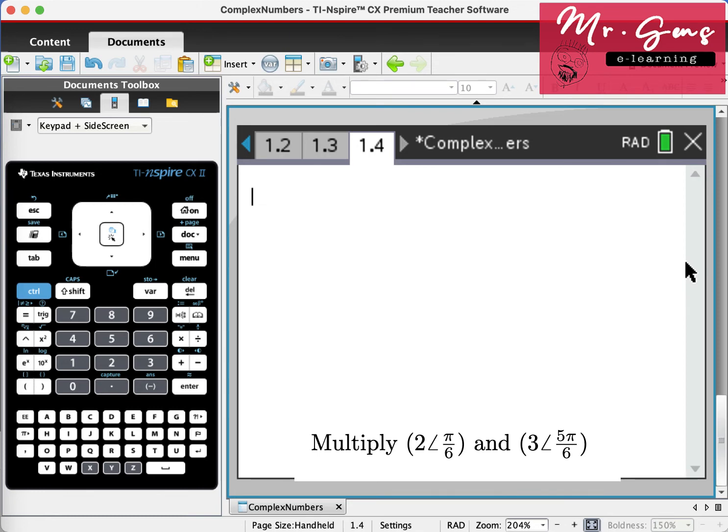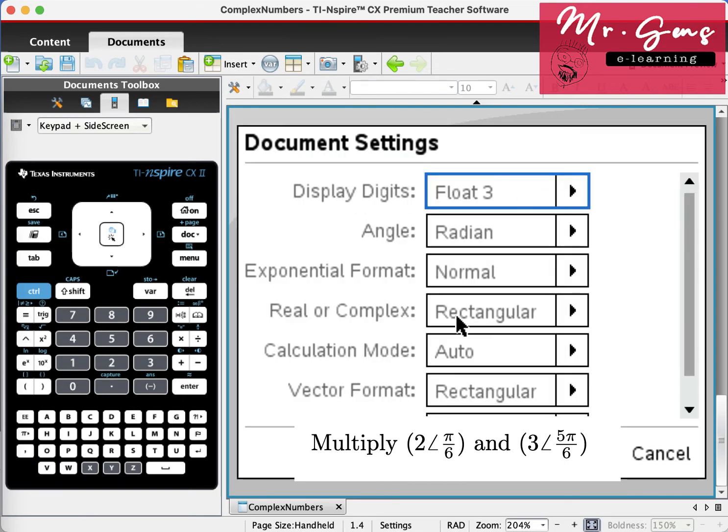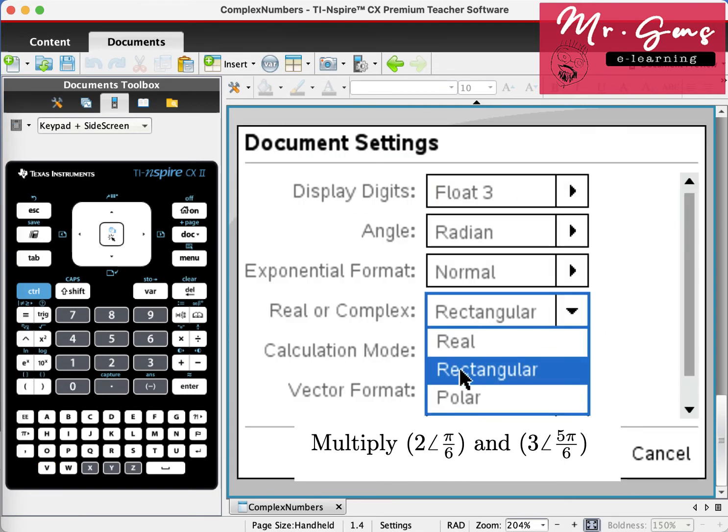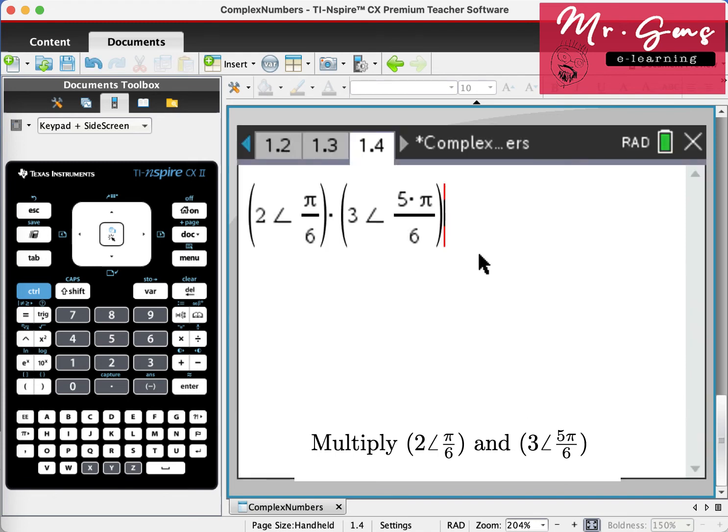And here is my last question for today. Let's go to document settings. This time, let's select the rectangular form. Our angle setting is radian. When I press enter, our final answer will be in the rectangular form.